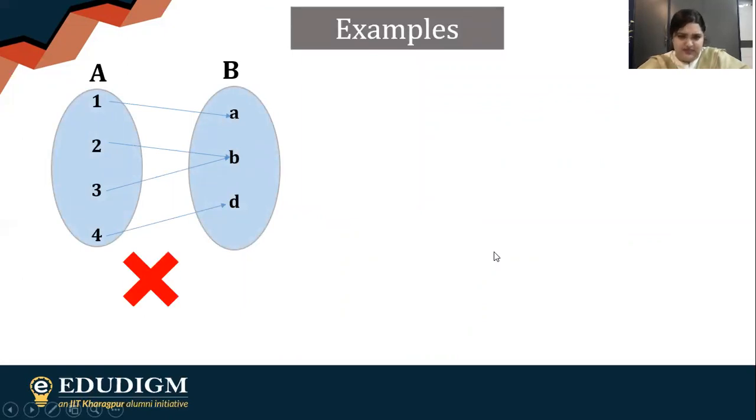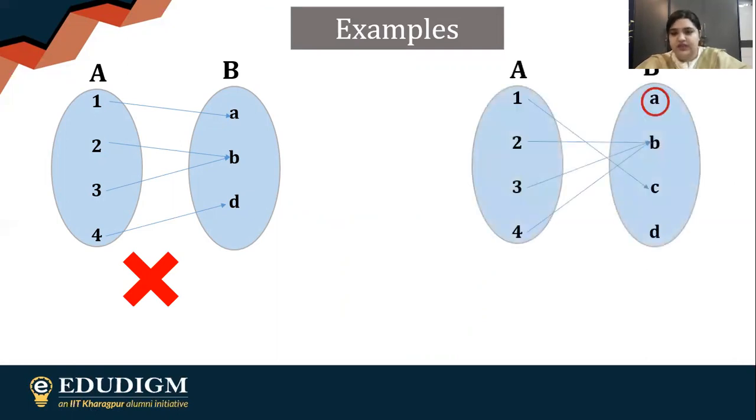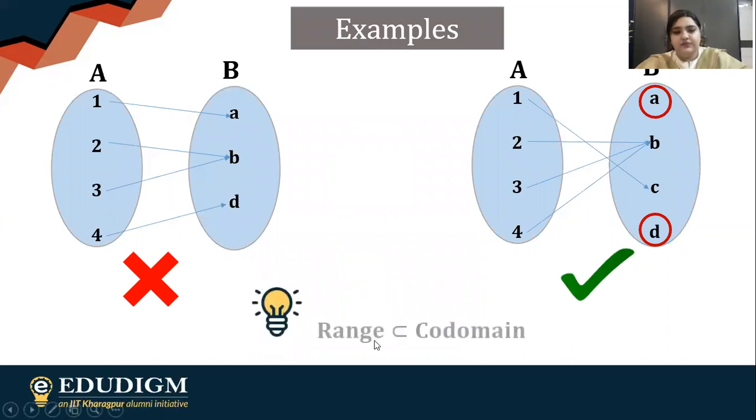Let's take another example. The first one is not into. If you remember the previous examples we considered, this is actually onto, so this is not into because all the possible elements you take in B have pre-images. Here you have elements like a and d which don't have pre-images. You don't have to find all of them—at least one will be enough. But I'm pointing out that you can have elements which are not having pre-images, so this is into.